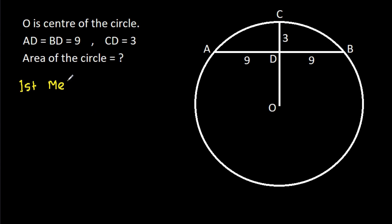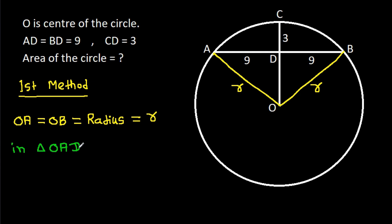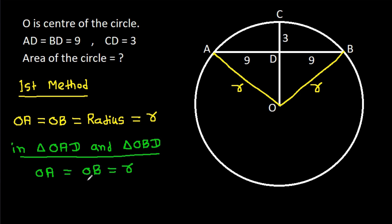The first method: if we join OA and OB, then OA will be equal to OB — that will be the radius of the circle, suppose R. So OA is R and OB is R. Now in triangle OAD and triangle OBD, OA equals OB which is R, and AD equals BD which is 9, and OD is common.